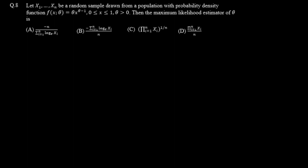Moving on to question number 8: let X1 through Xn be a random sample drawn from a population with pdf f(x; θ) = θ·x^(θ−1), where x lies between 0 and 1 and θ is a positive number. We need to find the maximum likelihood estimator (MLE) of θ, i.e., θ̂.